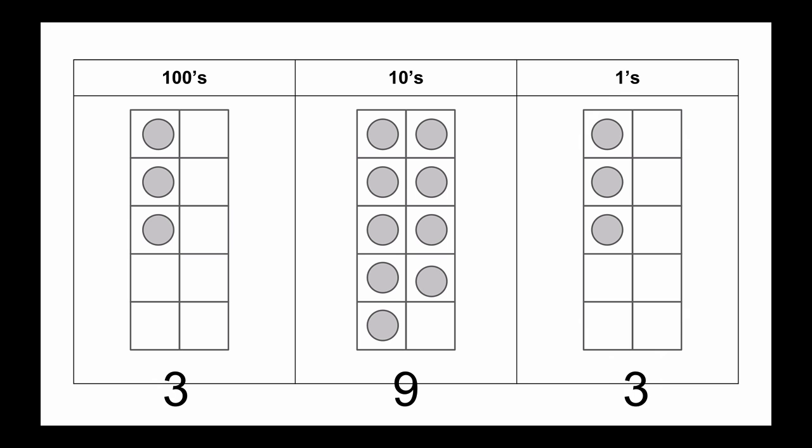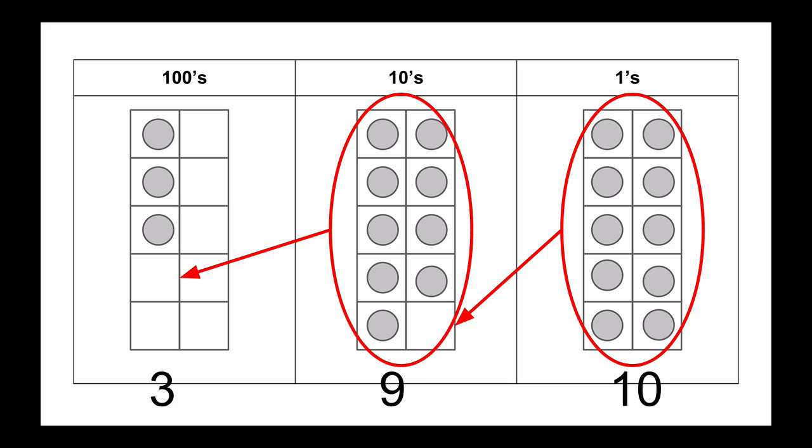And we can continue counting up 396, 397, and we're going to count. Now here's a really awesome thing that happens is we get to exchange and bundle up twice because first, over here,